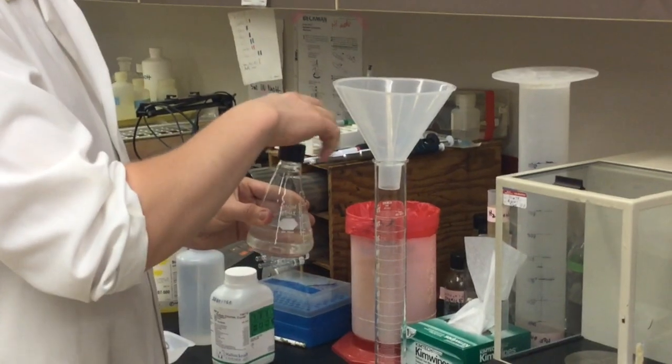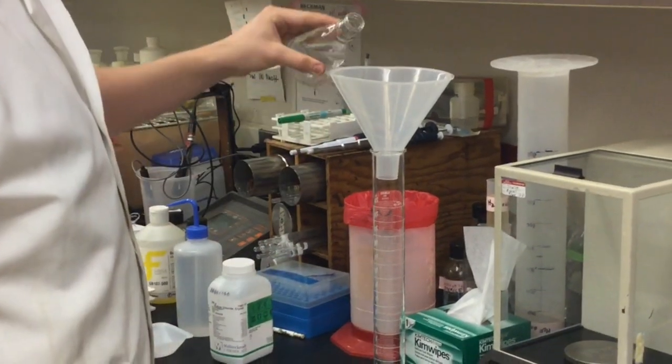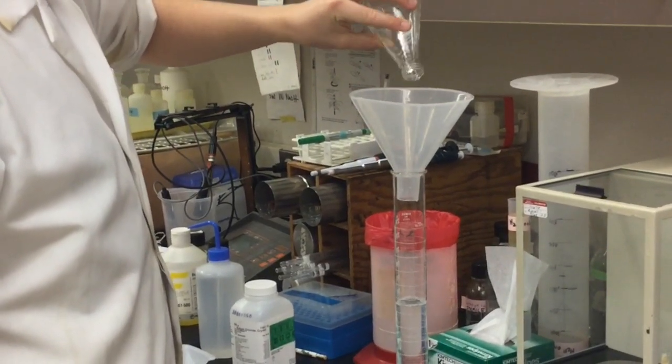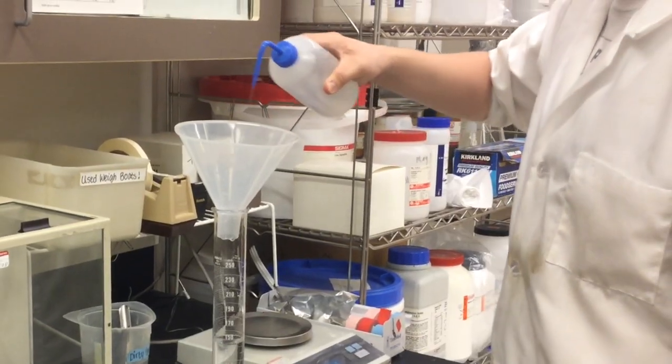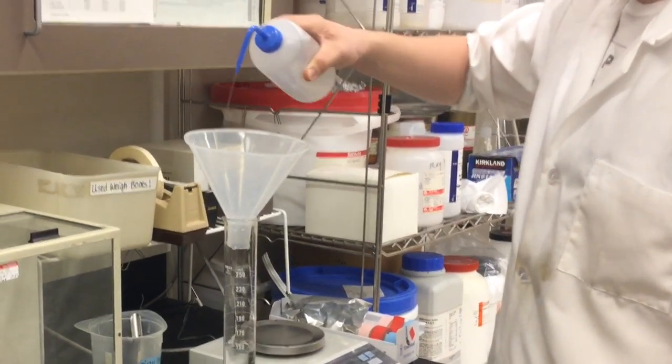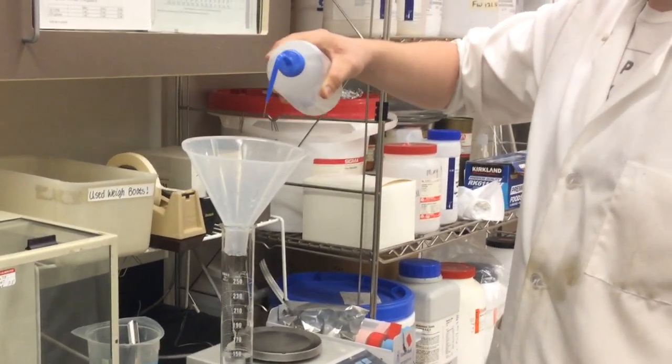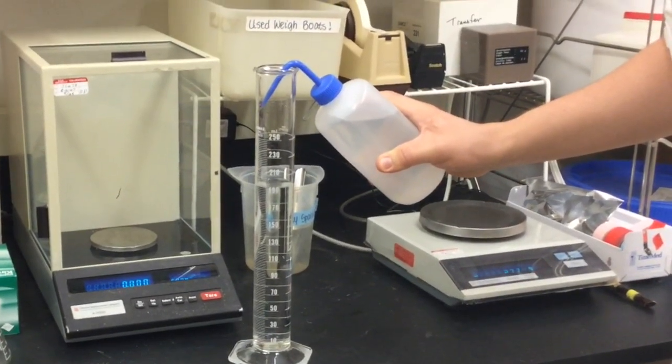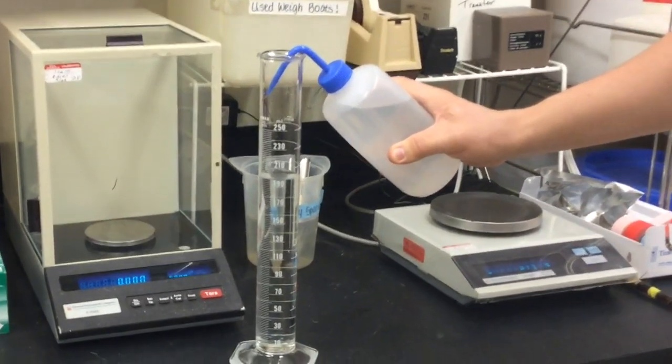Transfer your solution to the graduated cylinder using the funnel. Use the squirt bottle to rinse the funnel in order to get any remaining crystals from it. Use the squirt bottle to add nano-pure water to the graduated cylinder until the meniscus touches the 200 milliliters line.